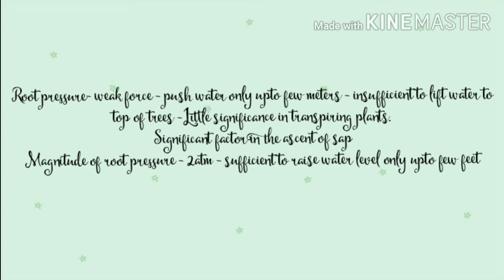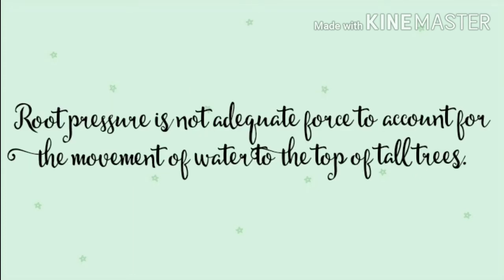It was believed that root pressure is a significant factor in the ascent of sap. But it has been demonstrated that water moves to the top of the plants even if the roots have been removed. Moreover, the magnitude of root pressure is about 280 kPa, which is just sufficient to raise the water level up to a few feet. Thus, it is widely accepted that root pressure is not an adequate force to account for the movement of water to the top of tall trees.